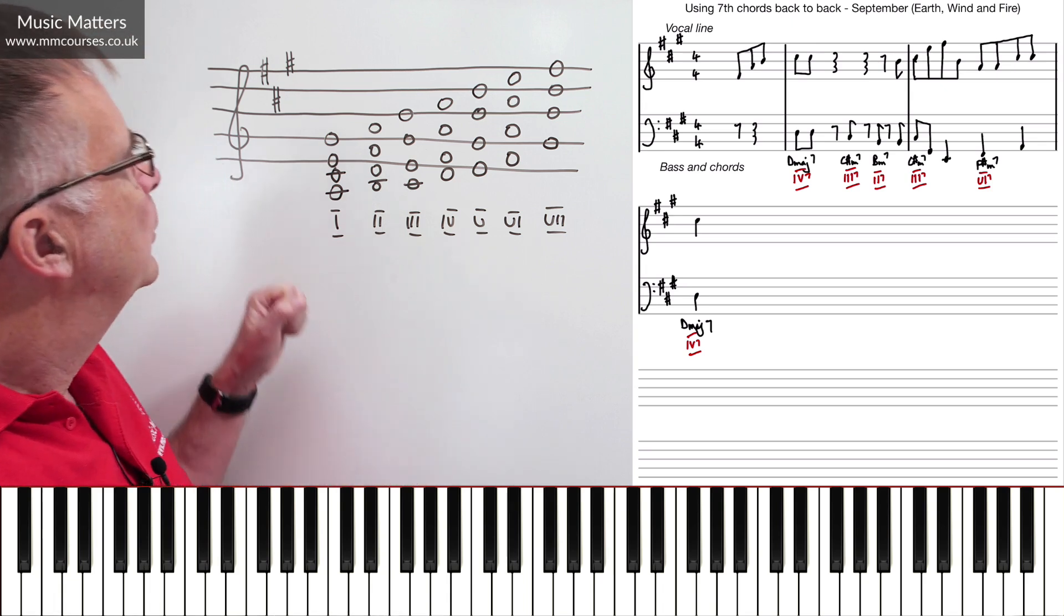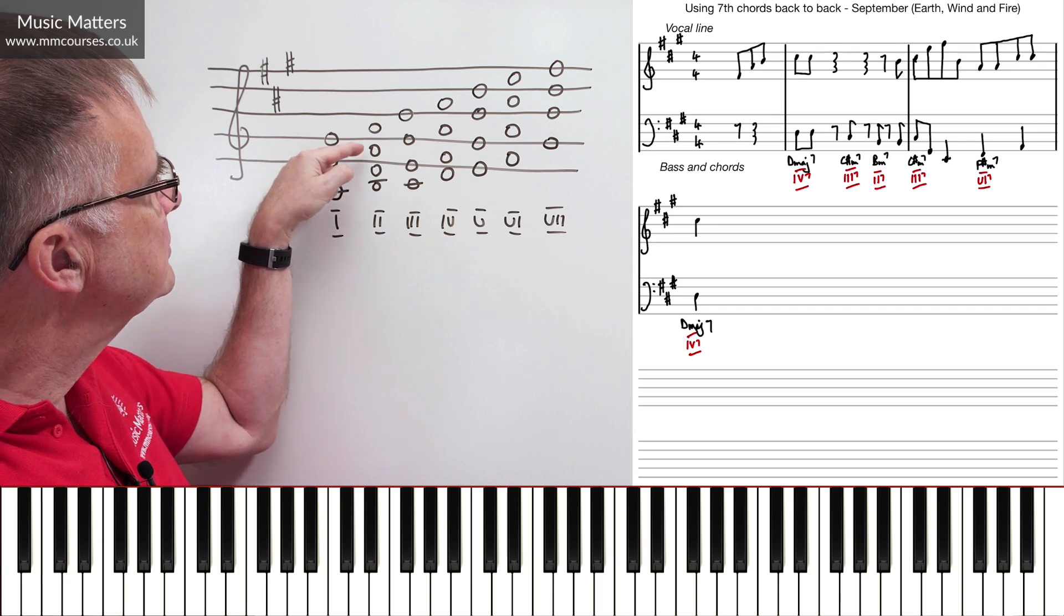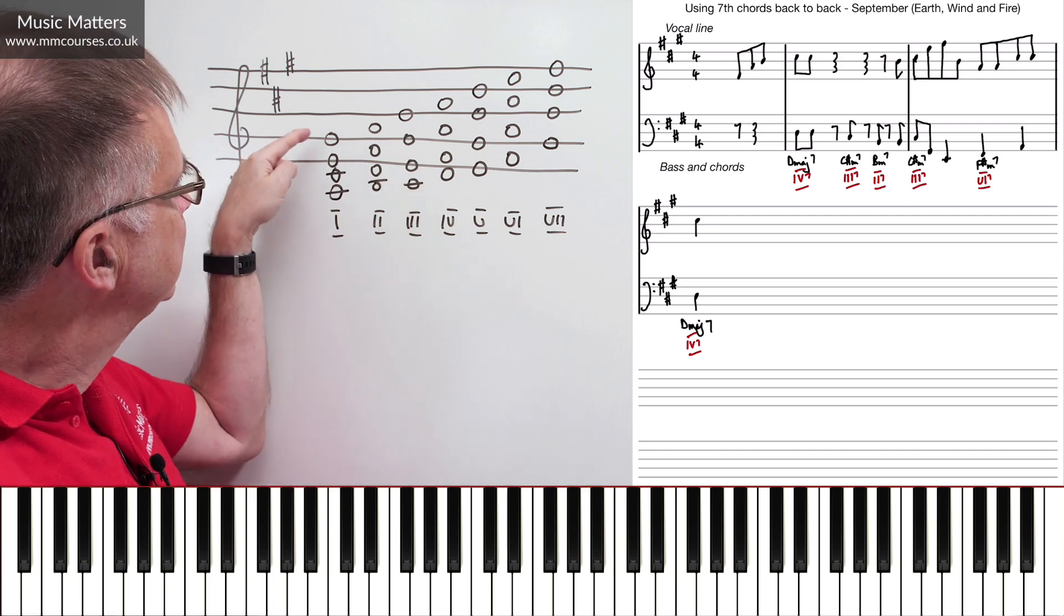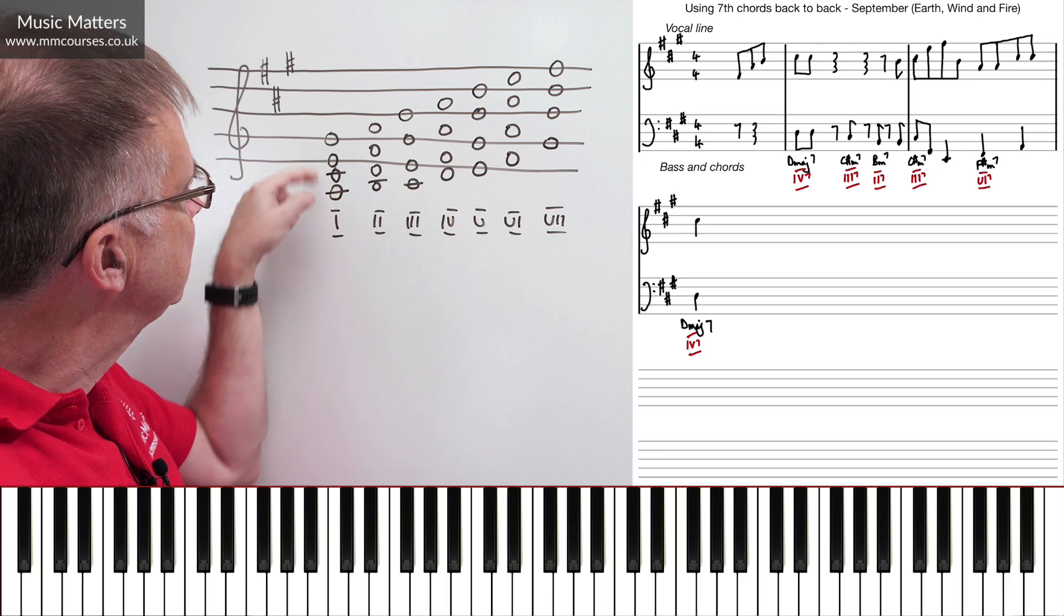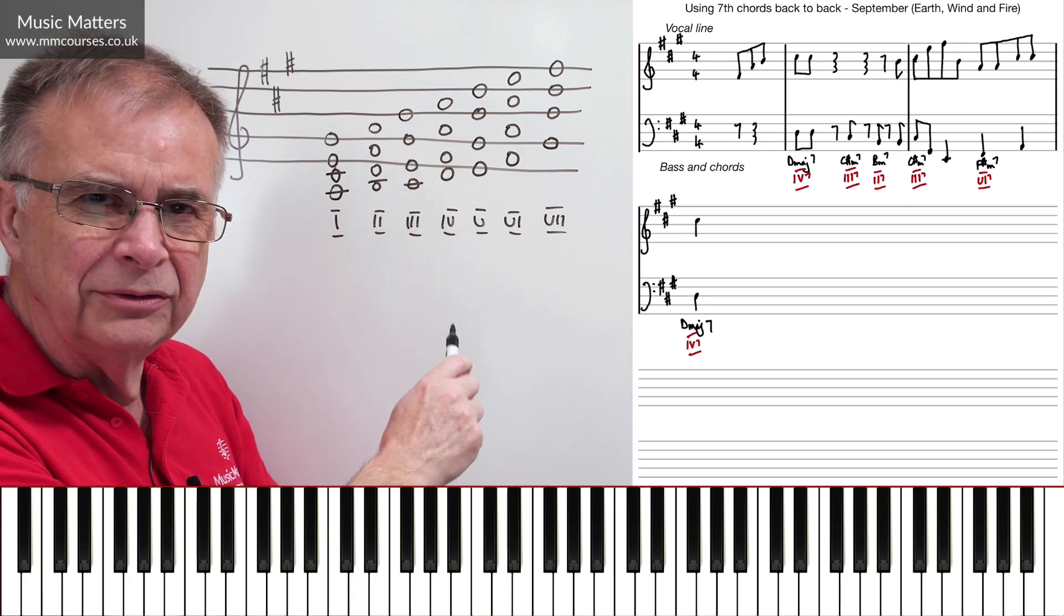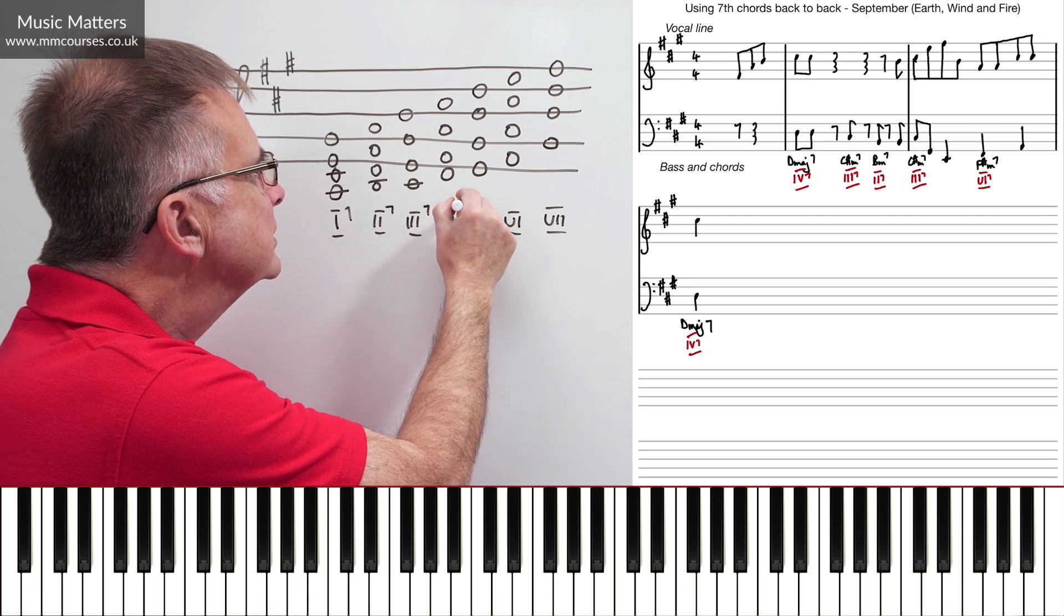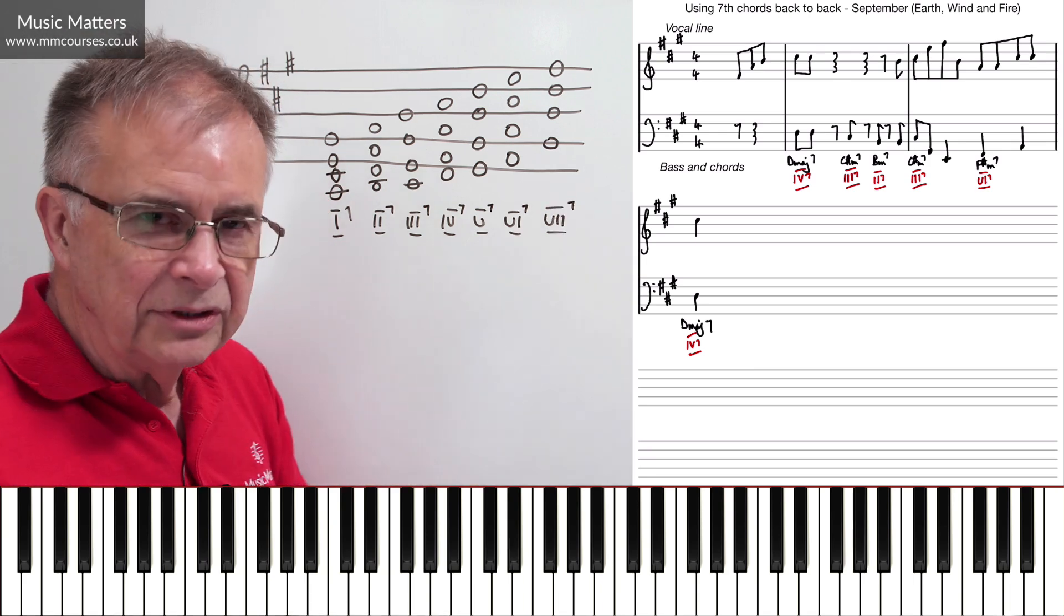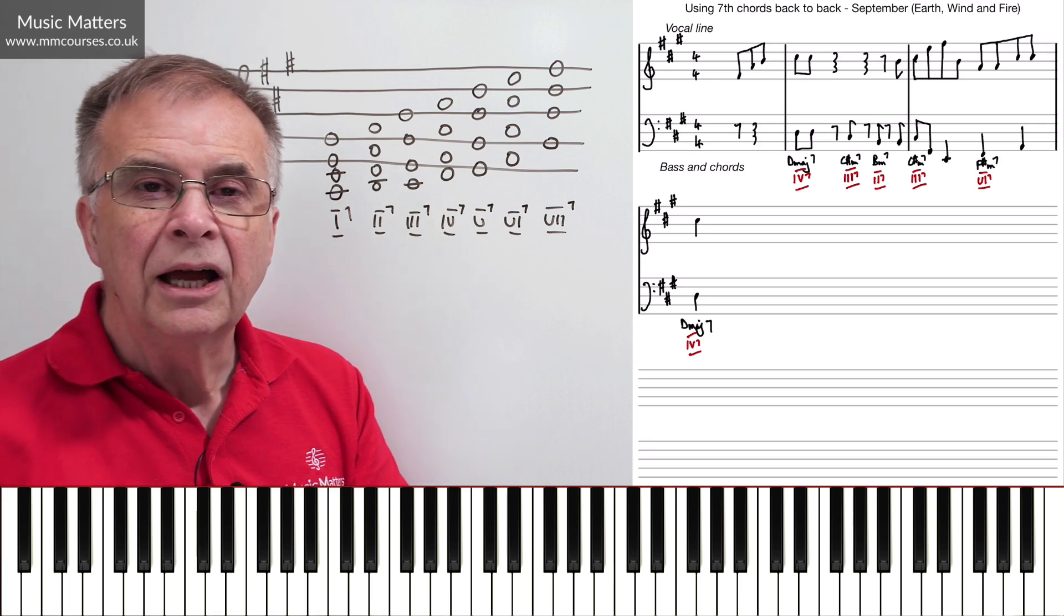And you'll notice as well, when you write an ordinary triad, you get three successive lines or three successive spaces. When you add a seventh, it will be another line. So we've now got all these four successive lines and four successive spaces. So it's a way of checking. If you've got something that looks different, you know you've made a mistake. So that's now I7, II7, III7, IV7, V7, VI7, and VII7. And then of course, this is giving us the basis of our chords.